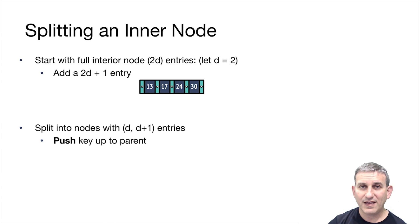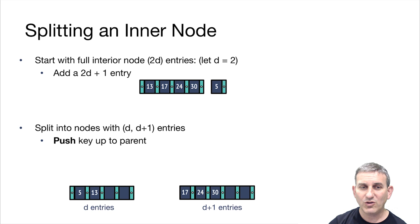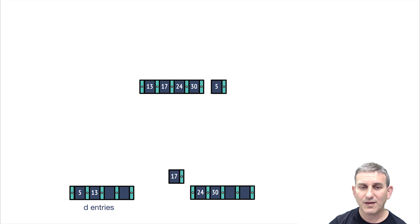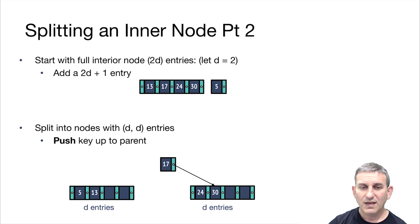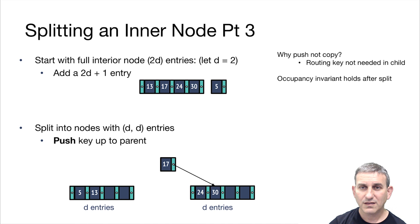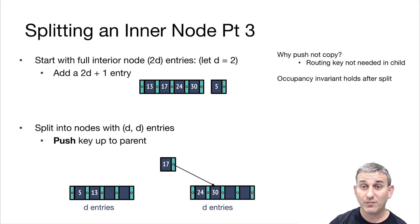When we get to an inner node and need to split that, we start with a full interior node with two D entries — again, in this picture D equals two. We add a 2D plus one entry. And what we're going to do is split that interior node into D and D plus one entries and push the key up to the parent. So in this case, we don't copy it — we push it up to the parent. We should now have D entries on the left and D entries on the right. We push and don't copy because this routing key doesn't need to be in the child — it wasn't serving any purpose there. Notice that the occupancy invariant does hold after the split.